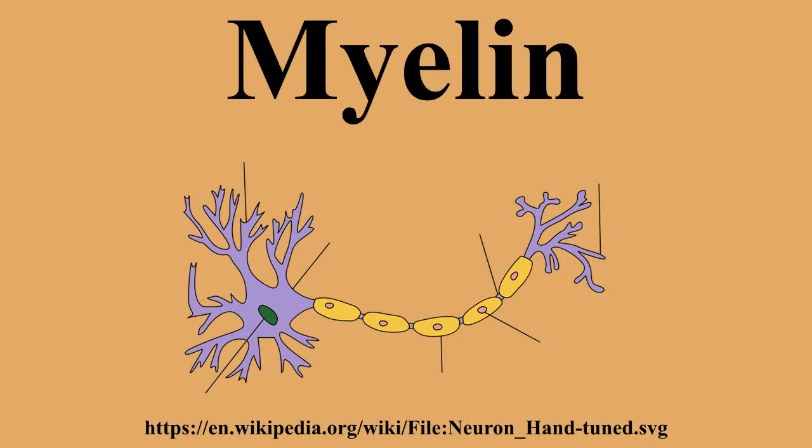Myelin is a fatty white substance that surrounds the axon of some nerve cells, forming an electrically insulating layer. It is essential for the proper functioning of the nervous system. It is an outgrowth of a type of glial cell. The production of the myelin sheath is called myelination or myelinogenesis.